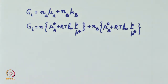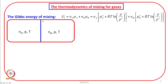Now let us allow these gases to mix. What we have done is that when these gases were not mixed, the total initial Gibbs function is N_A times μ_A plus N_B times μ_B. And since pressure is same on both sides, for μ_A we have written μ_A° + RT ln(p/p°), plus N_B into μ_B° + RT ln(p/p°). Now let us remove this partition. Once you remove this partition, these gases will mix with each other. However, since the pressure on both sides is the same, there is going to be no change in pressure, there is going to be no change in temperature.